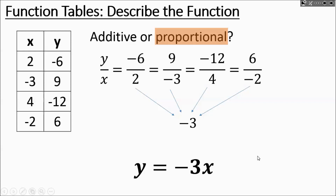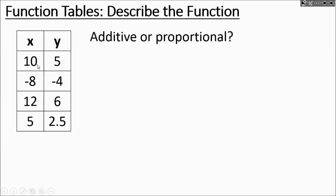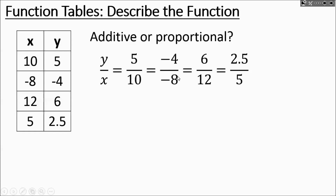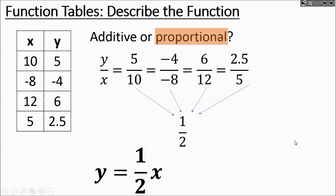One more table: is it additive or proportional? Trying y minus x: 5 minus 10 is negative 5, and negative 4 minus negative 8 is not the same thing, so it's probably proportional. Checking y over x: 5 over 10, negative 4 over negative 8, 6 divided by 12, and 2.5 over 5. In lowest terms, they all work out to one-half. So this is a proportional relationship — we're multiplying every x value by one-half. The rule is y equals one-half x.